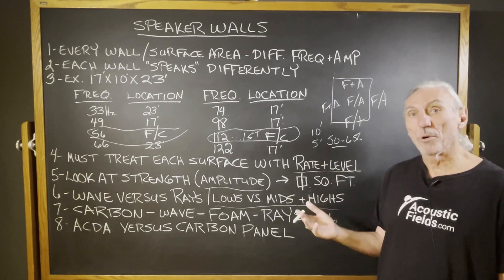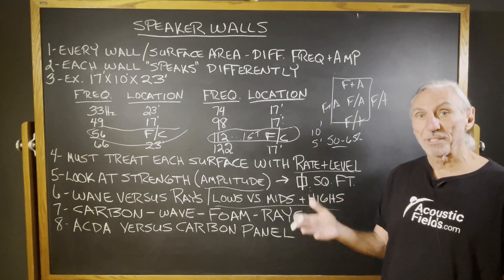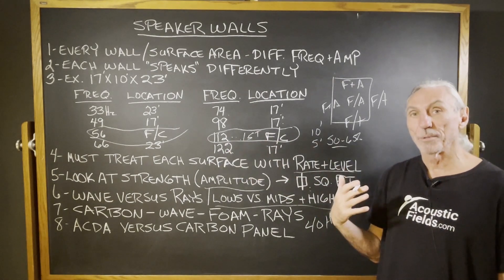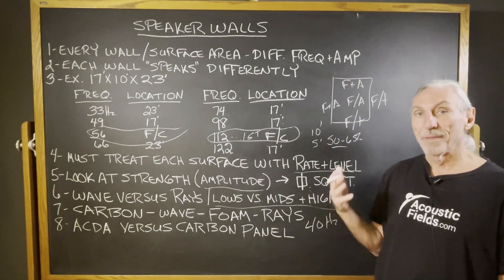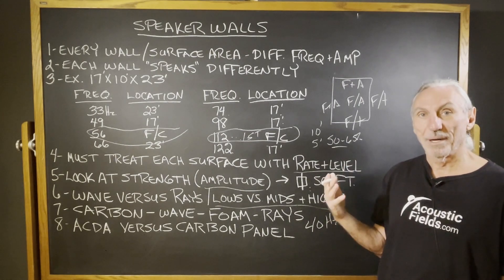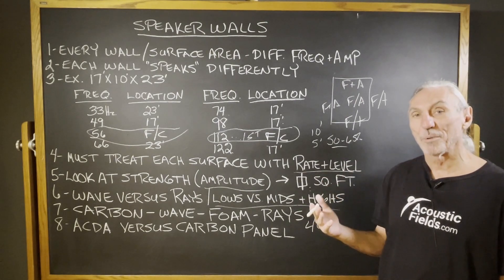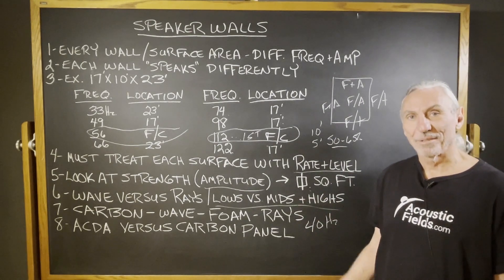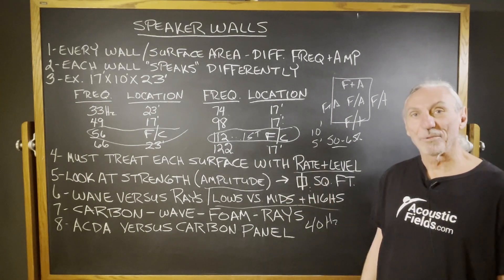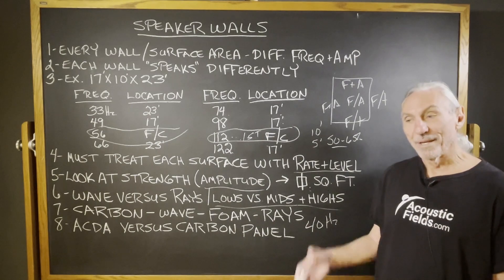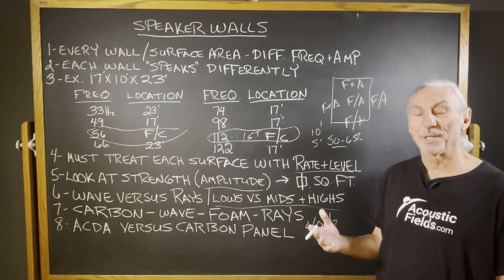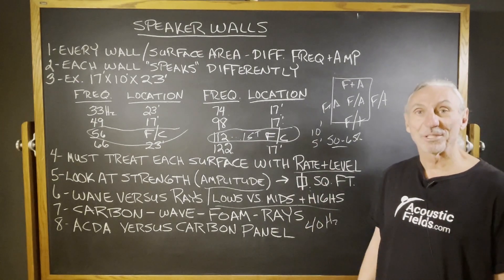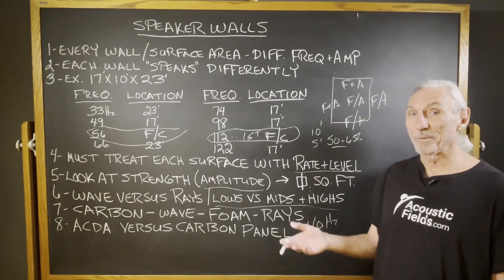A lot of people can't afford to do the whole room at once, which is ideal, so they break it up in phases. They'll treat the two sidewalls first — phase one — then phase two, the front and rear wall, and phase three, floor and ceiling. Inevitably, a month after the treatment goes in and they live and work in the room for a while, they'll call and say, 'The other surfaces — I can't believe how noisy they are.' The surface areas you treat get resolved, but the ones left untreated really become pronounced.